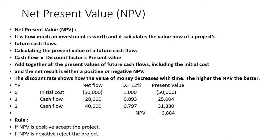Year 2 cash flow is $40,000. The Year 2 discount factor at 12% is 0.797. Multiplying $40,000 by 0.797 gives a present value of $31,880. Adding together all the present values, we get a positive NPV of $6,884.